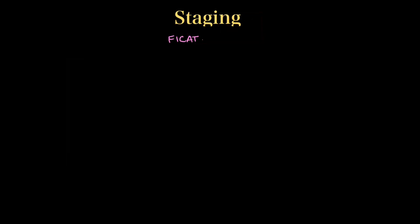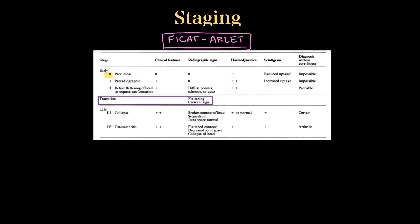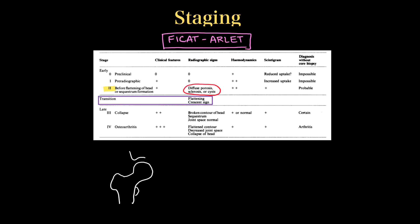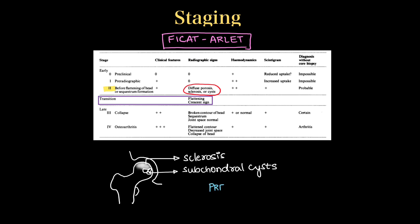Now we will see all three staging systems: Ficat-Arlet, Steinberg, and ARCO. In Ficat-Arlet staging: Stage 0 is the preclinical stage with no clinical or radiographic signs, only hemodynamic changes. Stage 1 is the pre-radiographic stage with only increased uptake on bone scan. Stage 2, before flattening or sequestrum formation, shows radiographic signs such as diffuse porosis, sclerosis, or cysts in the subchondral region — also called the pre-collapse stage or Stage 2a.